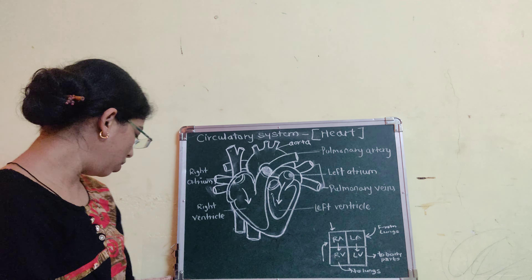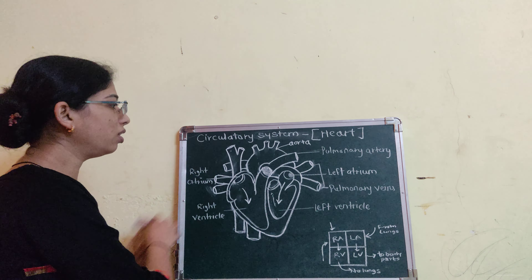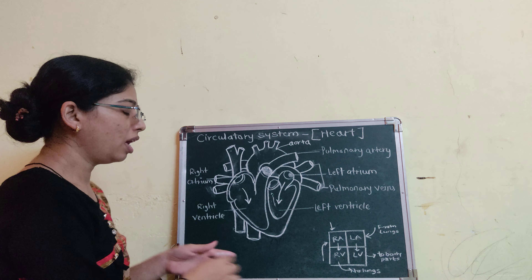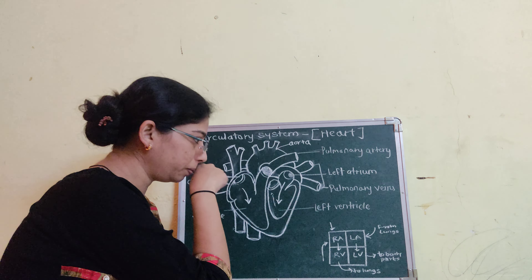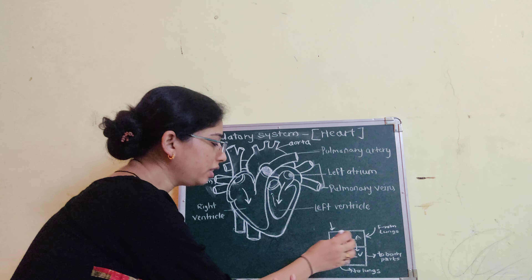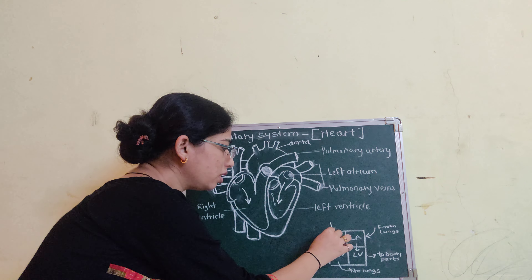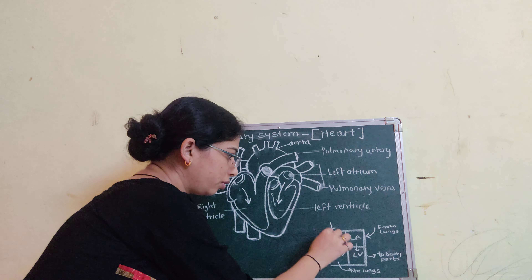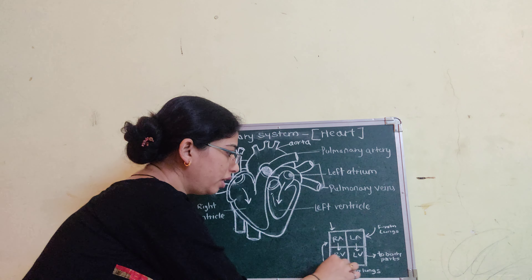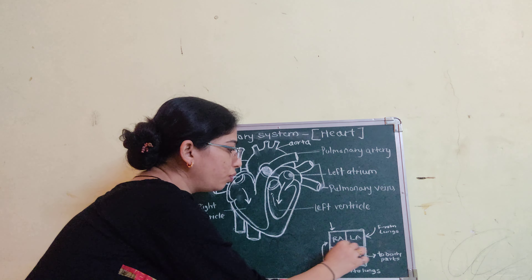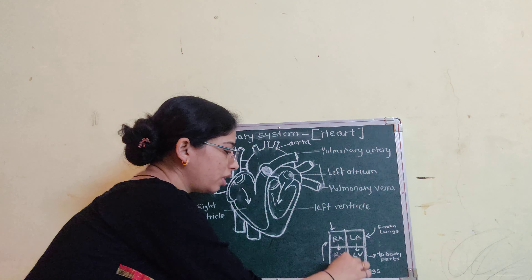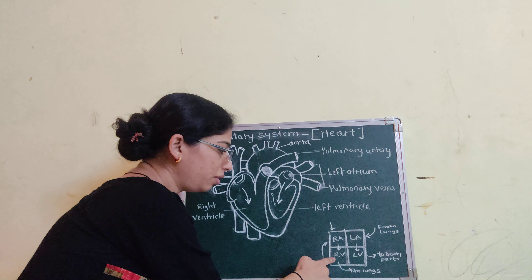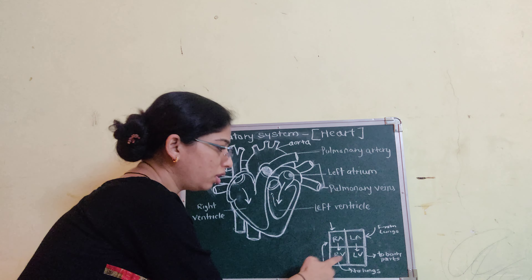The blood enters into the heart two times: first as de-oxygenated blood, and second as oxygenated blood. Therefore, this is known as the double circulatory system of the heart.